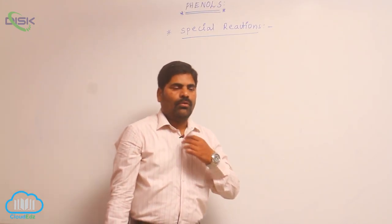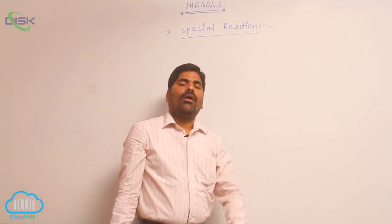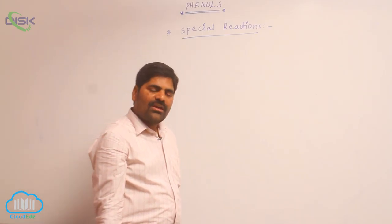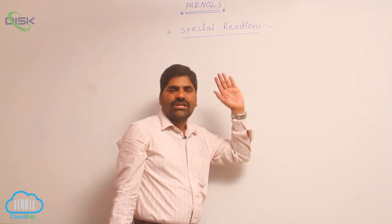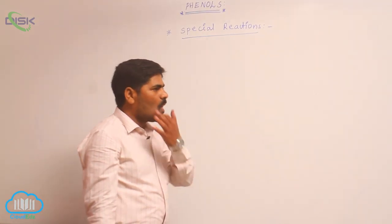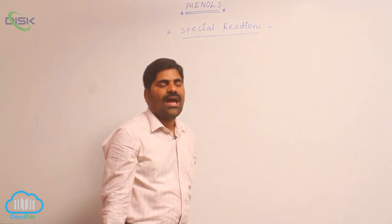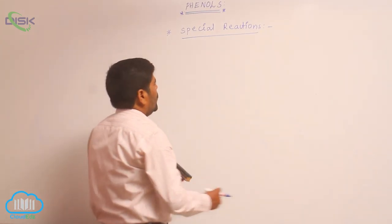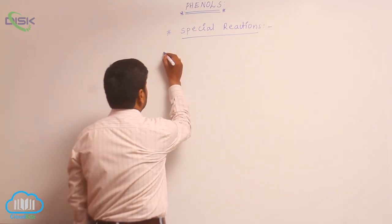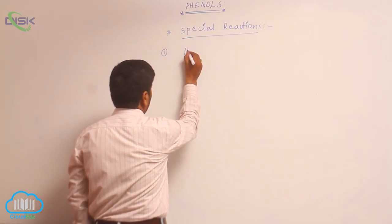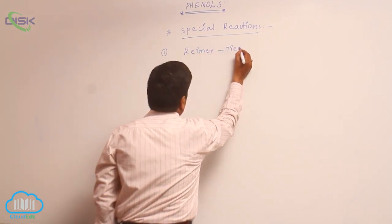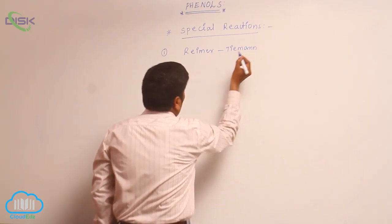In benzene, the electron cloud is involved in electrophilic substitution reactions, whereas in phenol a negative charge is involved, increasing electron density at the ortho and para positions. This is why phenol undergoes electrophilic substitution reactions as well as some special reactions with mild and neutral electrophiles. The most important of these is the Reimer-Tiemann reaction.